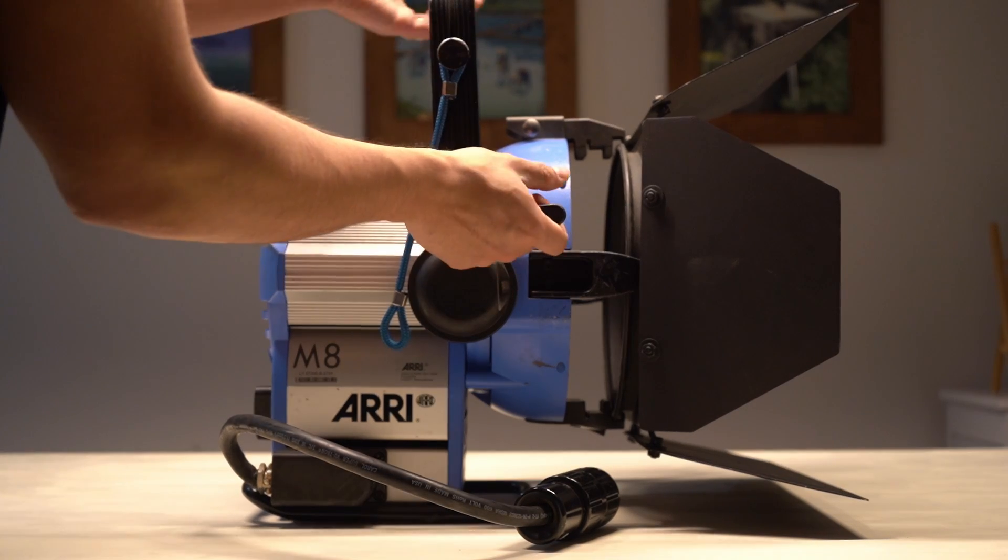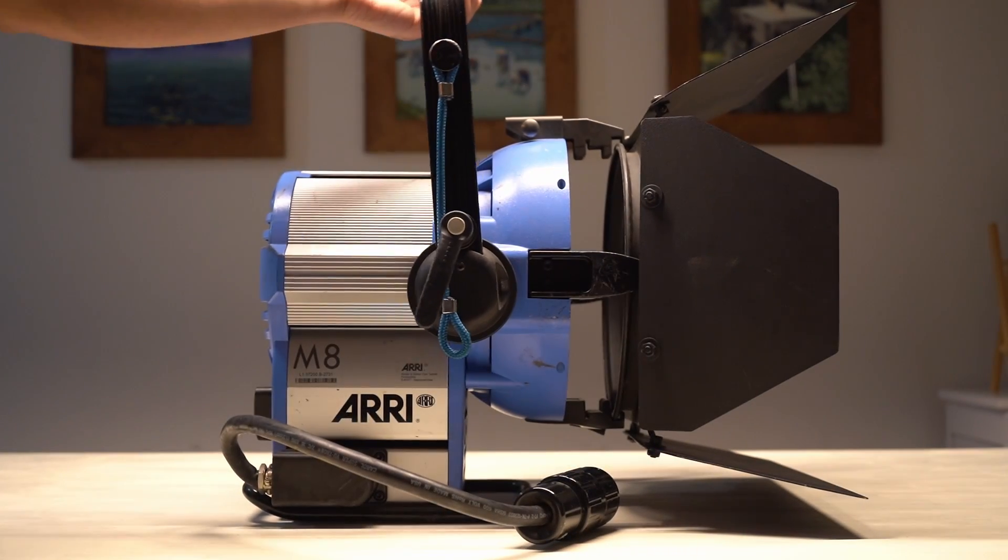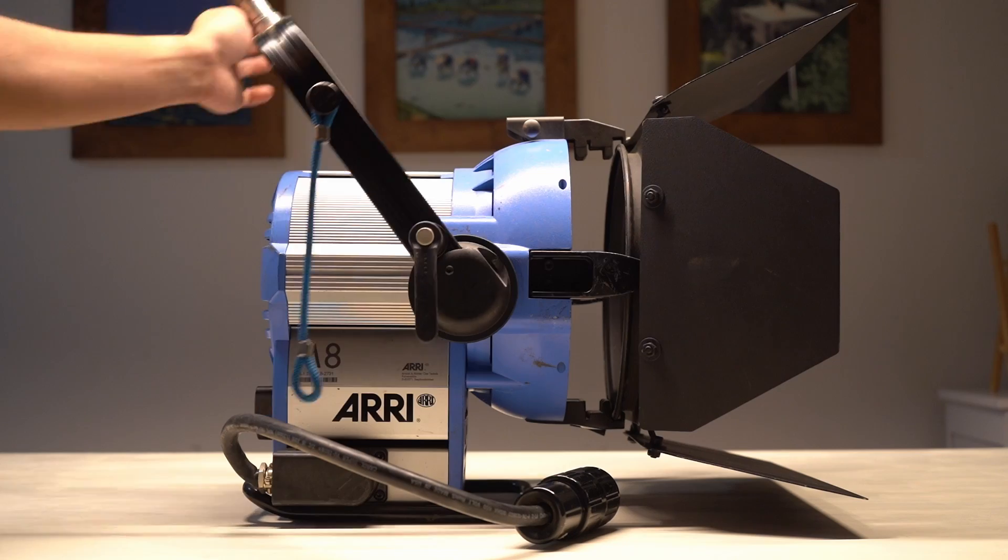The yoke is a way to reposition the tilt of the light as it's connected to a stand with the junior pin. You can lock it to however tilt you want.